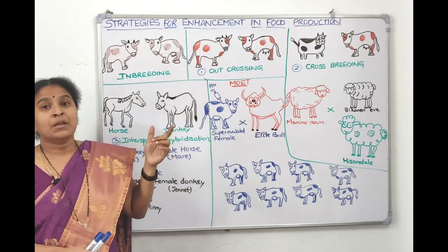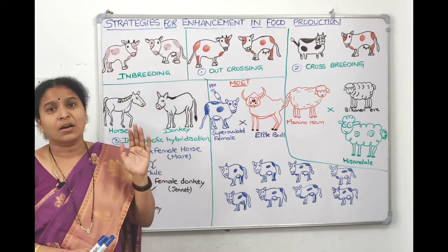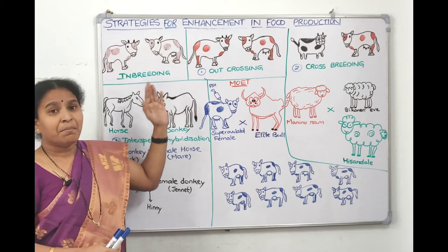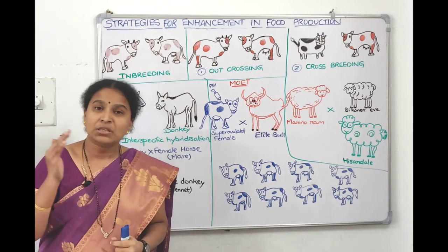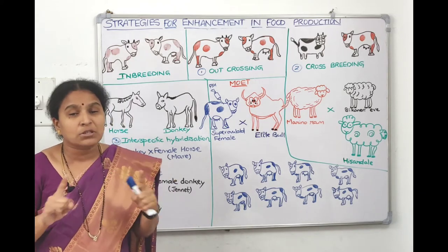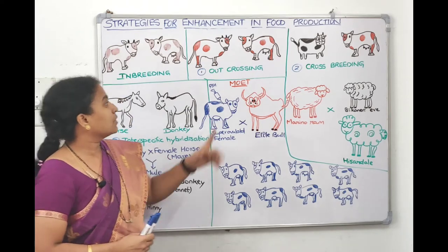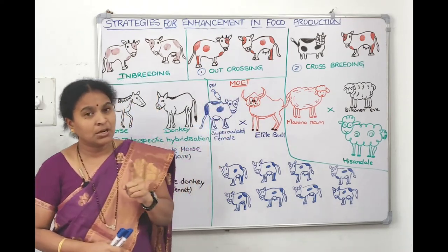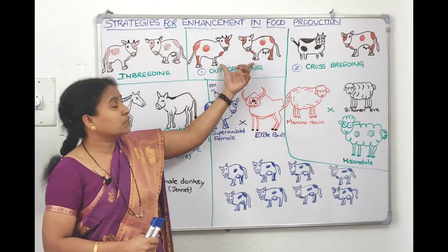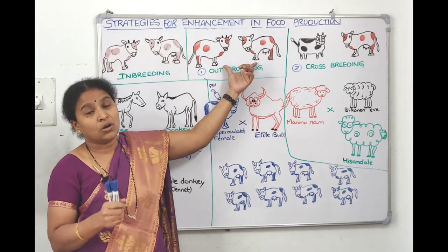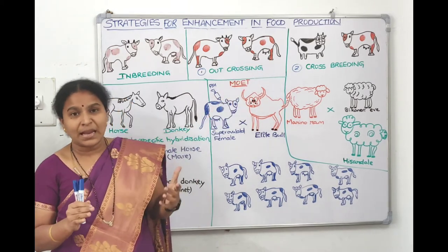To remove inbreeding depression, take the individual that is losing vitality and mate it with another individual of the same breed that is not closely related. In outcrossing, mating is between individuals of the same breed but they are not relatives and do not share common ancestors.